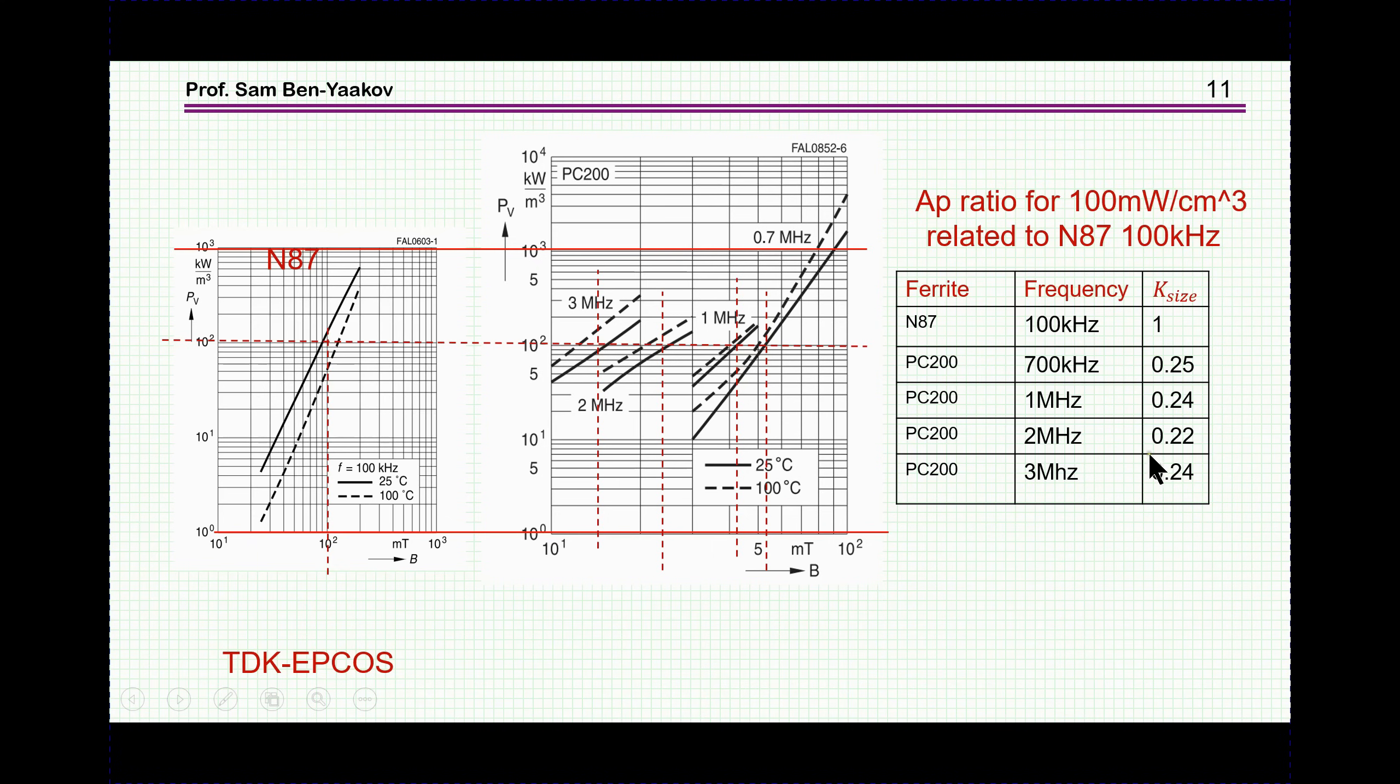Plugging it into this relationship, I got this table. What I've found is that for high frequency operation, 700 kHz to 3 MHz, the reduction ratio is about 4-fold, 4 to 5-fold. If I work, say, in the range of, say, 2 MHz, it's 0.22, the size, the AP, the area product of the high frequency, as compared to 1, which is the 100 kHz.